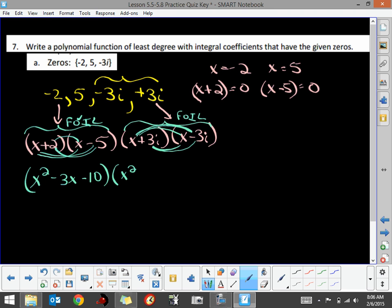On the very last terms, we'll have -9i². You have +3 times -3 is -9, i times i is i². On i², you have to remember that i² simplifies to -1. So really, it's -9 times -1. So that factor becomes x²+9.